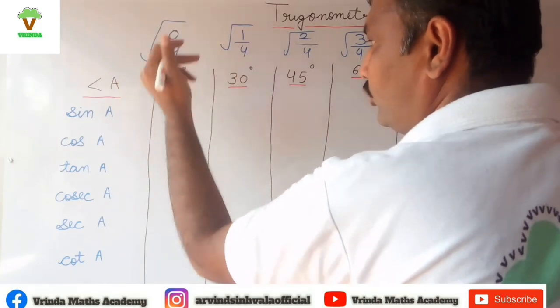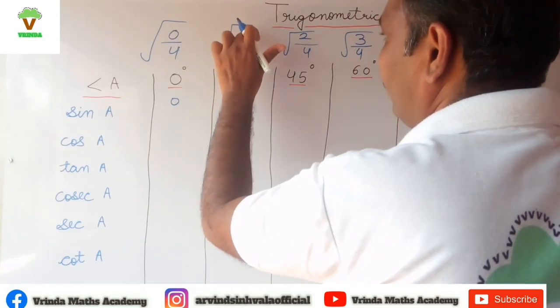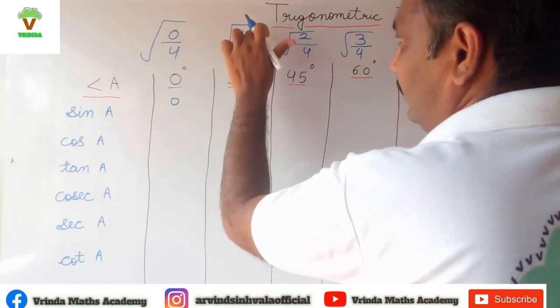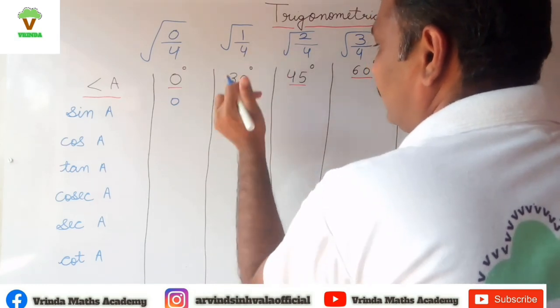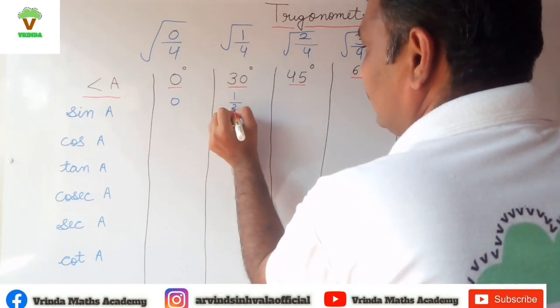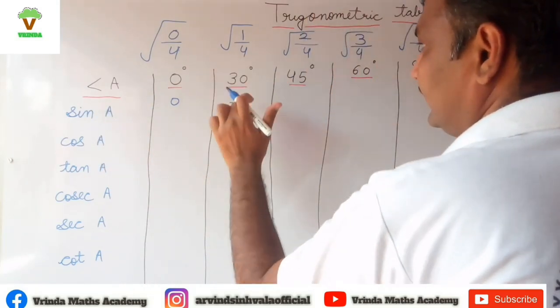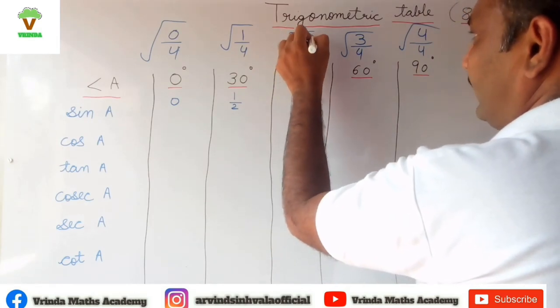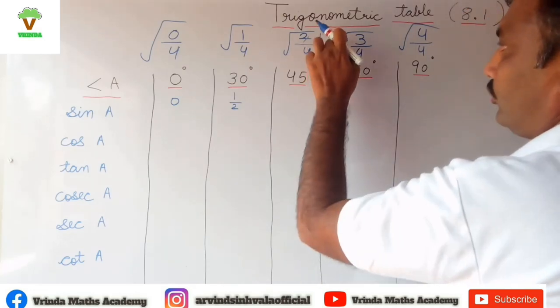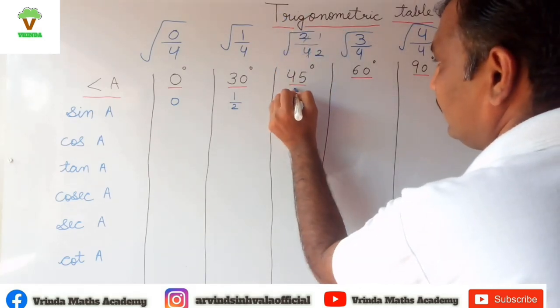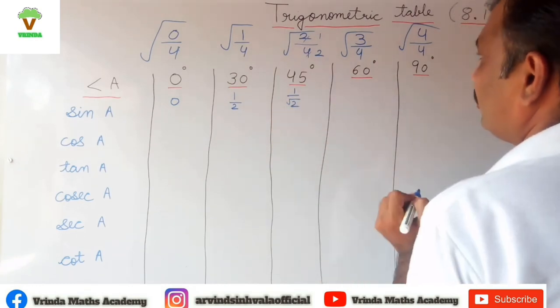is 0, and root of 0 is also 0. 1 divided by 4, root of 1 is 1. Root of 4 is 2, so the value of sine 30 degrees is 1/2. If I cancel out 2 and 4, I get 1/2. Root of 1 is 1 and root 2 remains root 2.